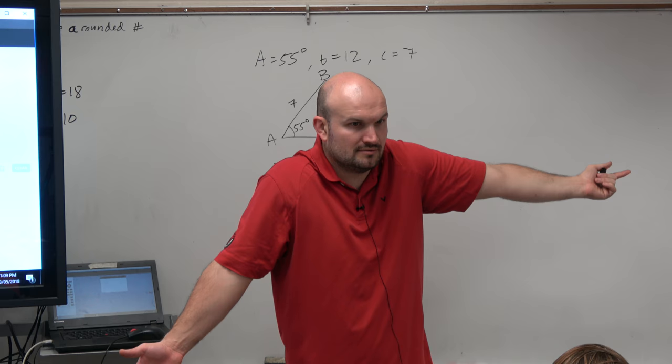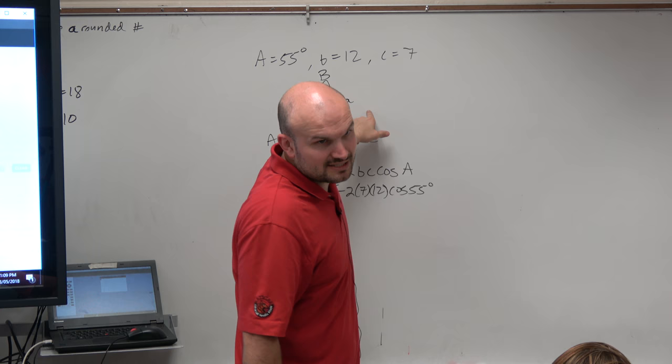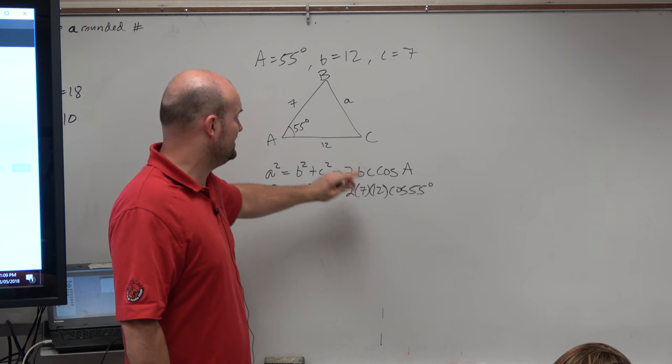And I can't solve for cosine of B or cosine of C, because I don't know what a is. So the only formula that would work is this one, because I have all the information I need except for a. So this is the only formula where there's only one unknown, right?